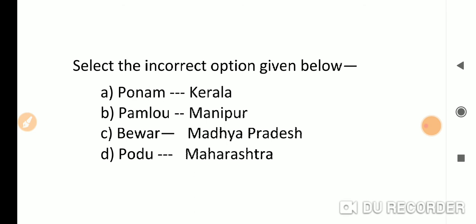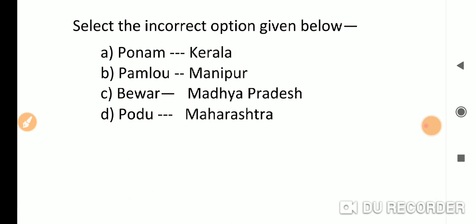Which of the following is incorrect? Shifting agriculture is called by different names in different states. Ponam in Kerala is correct, Pamlou in Manipur is correct, Bewar in Madhya Pradesh is correct. The incorrect one is Podu - Podu is from Andhra Pradesh or Odisha for shifting agriculture. So the answer is D.